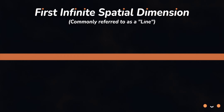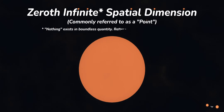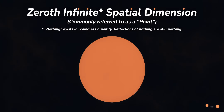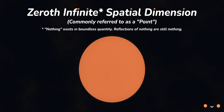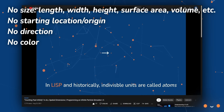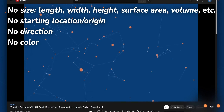The first infinite spatial dimension is built from an infinite number of the previous dimension distributed fairly in space. The previous spatial dimension is the zeroth, and because the zeroth holds no properties by definition, the first dimension will also hold no properties.